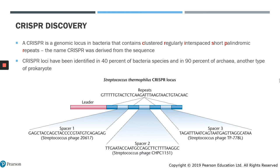CRISPR is a genomic locus in bacteria that contains clustered, regularly interspaced, short palindromic repeats. The name CRISPR was derived from the sequence itself. So when we talk about clustered, regularly interspaced, short palindromic repeats, we are referring to the CRISPR locus itself.